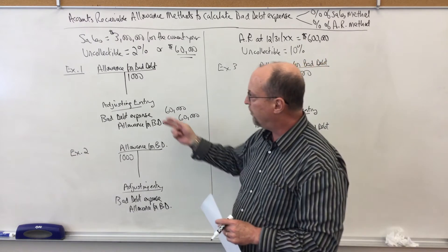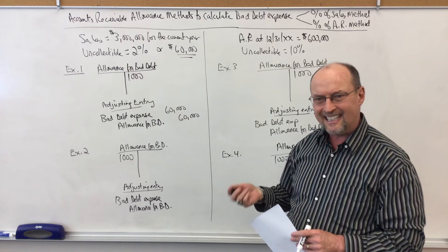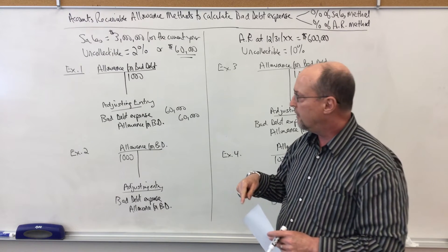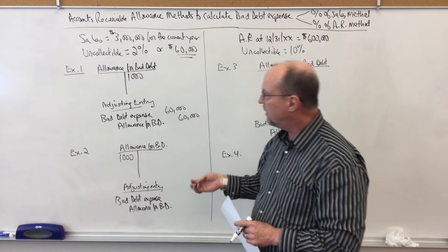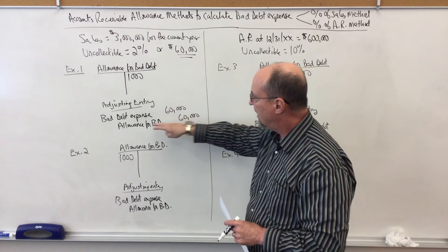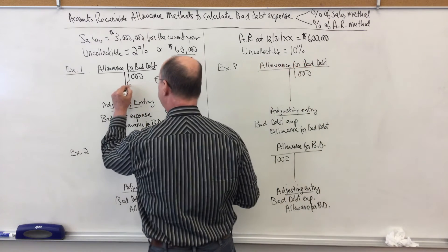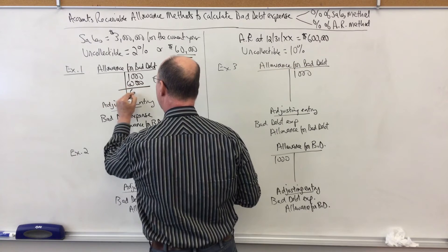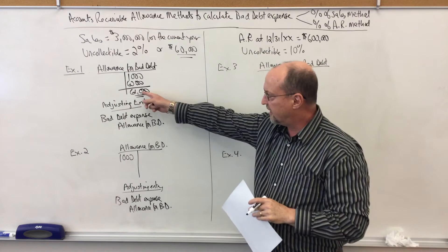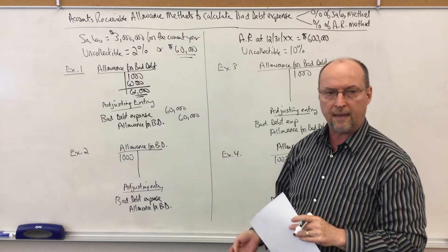In the first example, we assume we have this leftover or remaining balance in the allowance before we make the current year adjusting entry. This year's adjusting entry using the sales method: three million times two percent equals sixty thousand. I debit bad debt expense, which goes on the income statement, and I credit the allowance. That's going to leave a sixty-one thousand dollar credit balance in the allowance, and that's what we're going to report on the balance sheet.